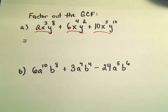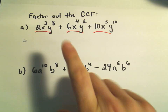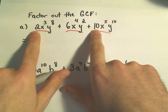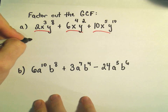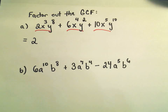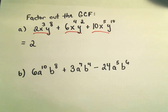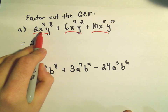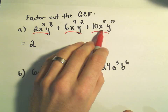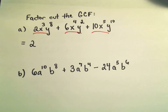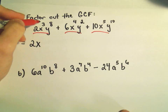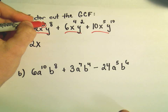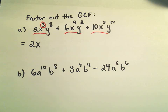I see three terms, and what I do is I first look numerically — I look at the coefficients. I see a positive 2, a positive 6, and a positive 10, and I think what's the greatest common factor of those three numbers? That would be a 2. Then I start looking at my variables. I notice there's an x in all three terms, so I can factor out an x. There's a 3, a 4, and a 5 — you just pull out the smallest exponent, so we're going to factor out x to the third.